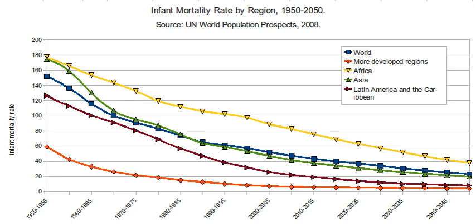Technological advances in medicine would decrease the infant mortality rate, and increased access to such technologies could decrease racial and ethnic disparities. It has been shown that technological determinants are influenced by social determinants, and those who cannot afford to utilize advances in medicine tend to show higher rates of infant mortality. Technological advances have, in a way, contributed to the social disparities observed today. Providing equal access has the potential to decrease socioeconomic disparities in infant mortality.